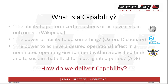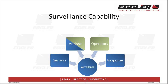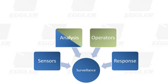But how do we deliver capability? A surveillance capability, as you can see on this slide, is made up of a broad range of elements. Some of the elements occur within the primary system of interest, comprising sensors, response, operators, and analysis capabilities. These elements deliver the primary operational effects of the surveillance capability, and are often referred to as the mission system.